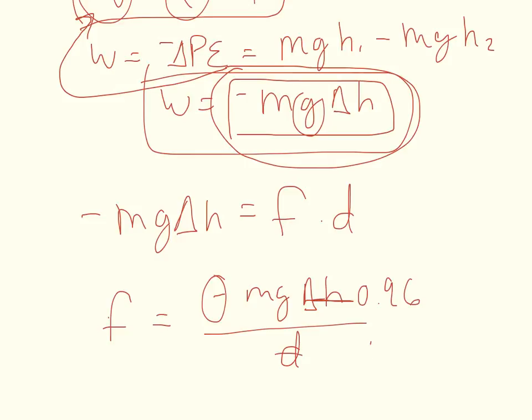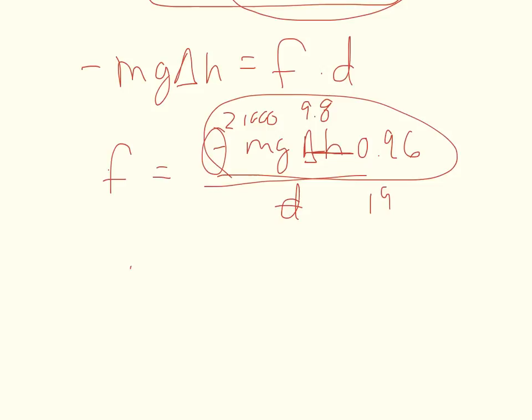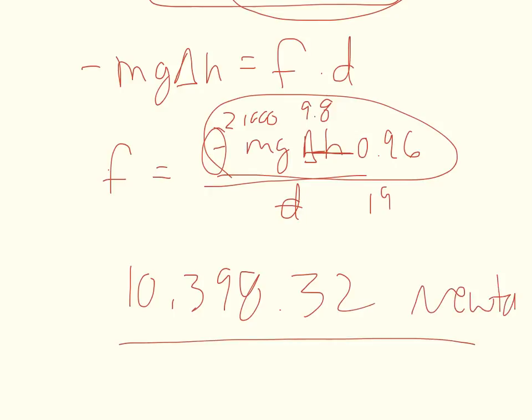And the distance is 19 meters. M is 21,000, and G is 9.8 meters per second squared. And you just multiply all of these, divide by 19, and the number that I get is 10,398.32. And that's Newtons.